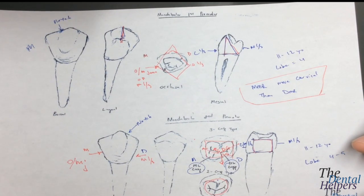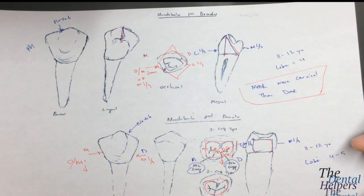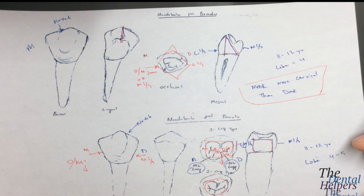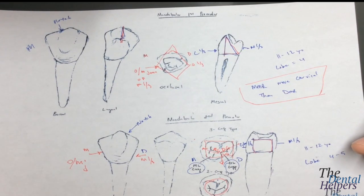The stamp versus the shearing cusp: the stamp is the functional cusp, while the shearing cusp is the non-functional cusp. If you bite your teeth together and see where the cusps lie, the buccal cusp of the mandibular teeth goes inside the occlusal table of the maxillary teeth, making those the functional or stamp cusps. The lingual cusps, on the other hand, are hanging outside, so those are the non-functional cusps.